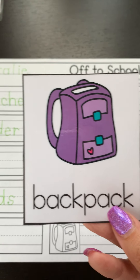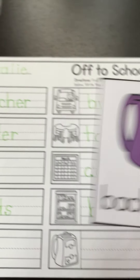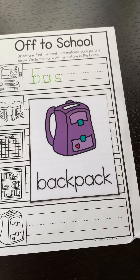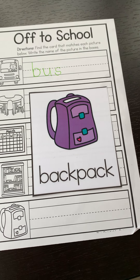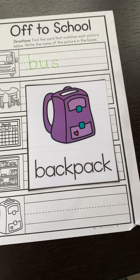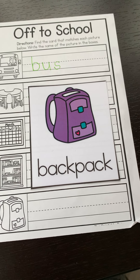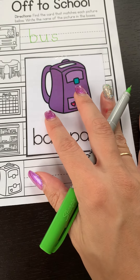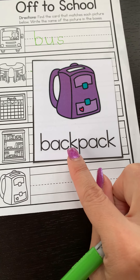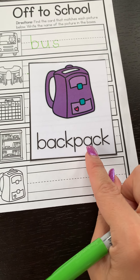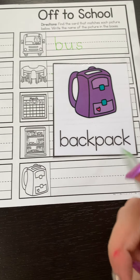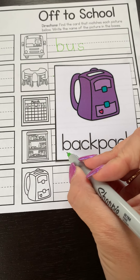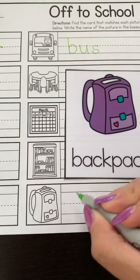Backpack. Backpack is where you put your school belongings. Backpack is a two-syllable word — two claps, two parts. Backpack. Backpack begins with the letter B. B is a skyline letter.